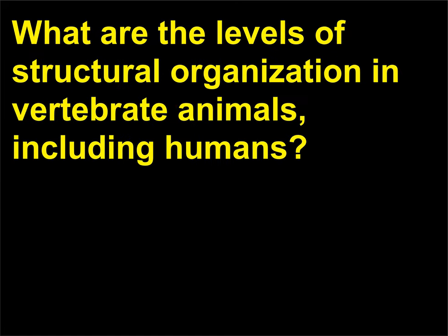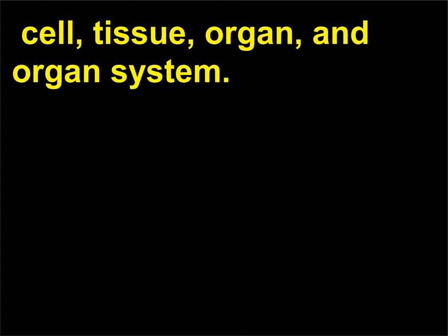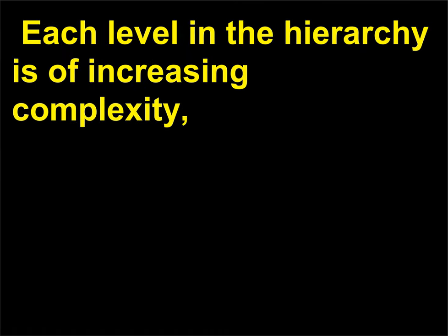What are the levels of structural organization in vertebrate animals, including humans? The levels are cell, tissue, organ, and organ system. Each level in the hierarchy is of increasing complexity, and all organ systems work together to maintain life.